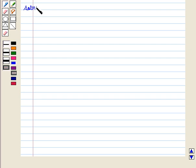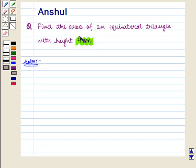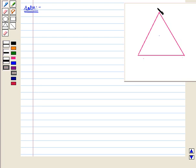Let us start with the solution of the given question. Here we have to find the area of an equilateral triangle having height 4 cm. To solve it we will use the strategy of drawing. So we shall first draw an equilateral triangle ABC.